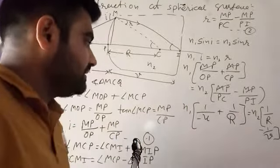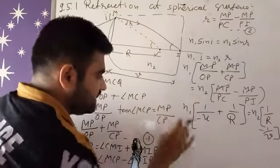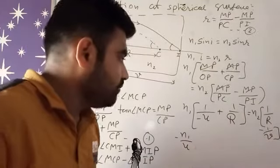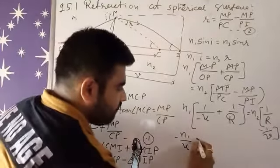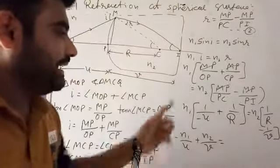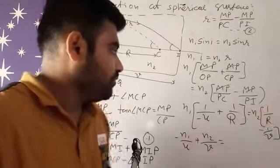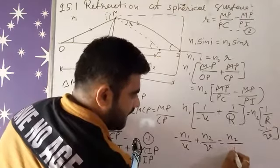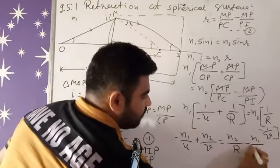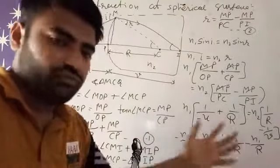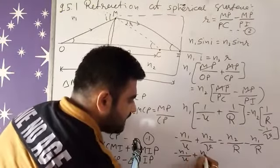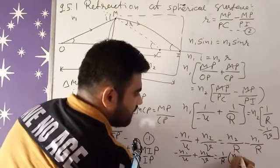After applying sign convention and rearranging, we move the R terms to the right-hand side and the u and v terms to the left-hand side. Multiplying n1 through gives minus n1 over u, and for n2 we get minus n2 over v on one side, with the R terms collecting on the right-hand side as negative n1 over R. Rearranging fully, the equation becomes minus n1 over u plus n2 over v equals (n2 minus n1) over R.